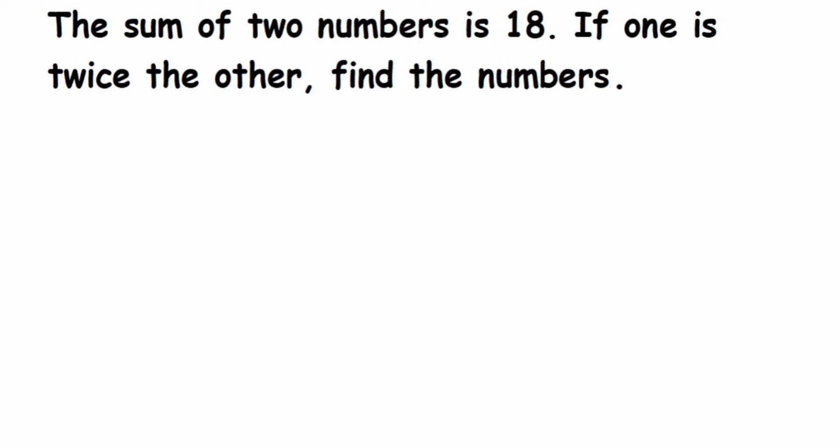Hey everyone, so here's one more question from linear equations. The question is: the sum of two numbers is 18. If one is twice the other, find the numbers. We don't know what these two numbers are, but we add them the sum is 18. So let us assume these two numbers as a and b.